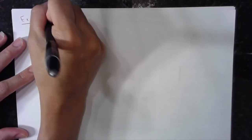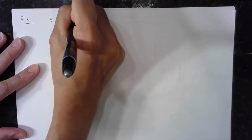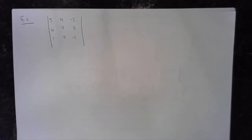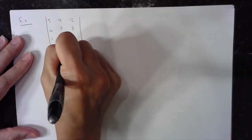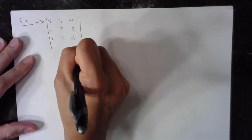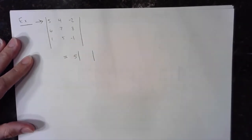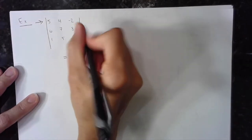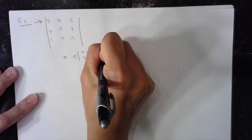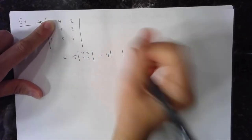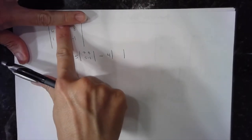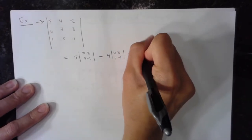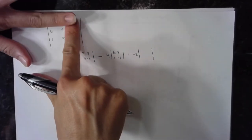So here we'll do one more example. The matrix is: 1, 5, 4, negative 2, 6, 7, 8, 1, 5, negative 1. That's a 3x3 matrix, and I want the determinant because of the vertical lines. Going across the top: take my 5, multiply by its corresponding matrix determinant, ignoring its row and its column. So its corresponding matrix is 7, 8, 5, negative 1. Minus my second element times its corresponding matrix — getting rid of its row and column — which is 6, 8, 1, negative 1. Plus the last element, negative 2, times its corresponding matrix: 6, 7, 1, 5.